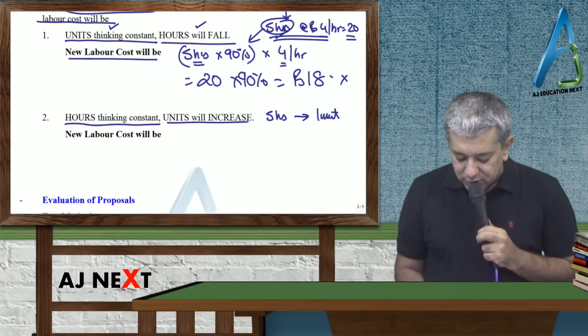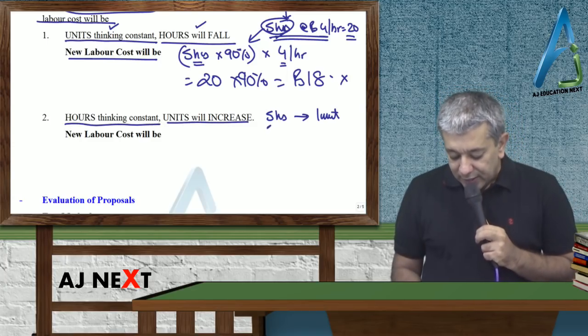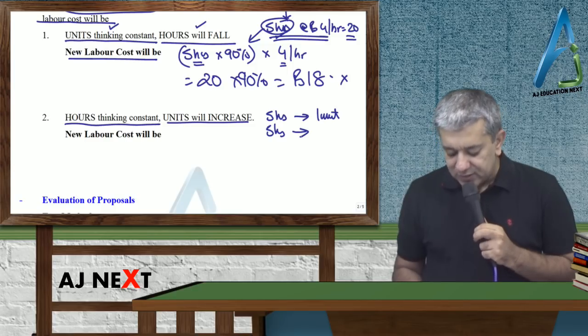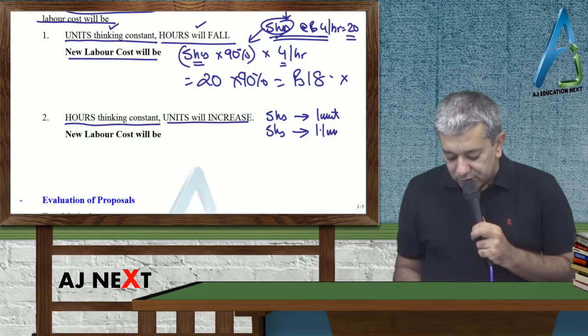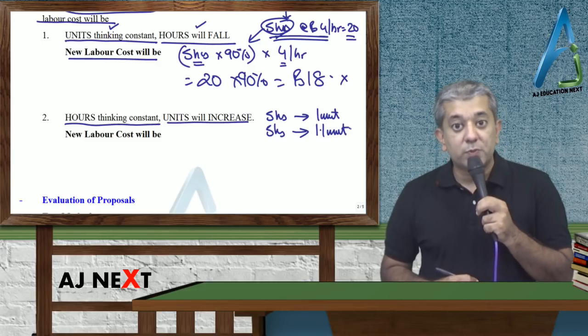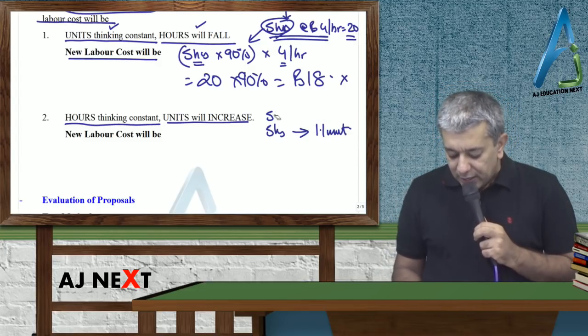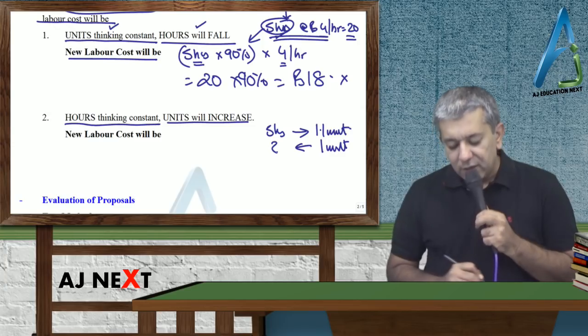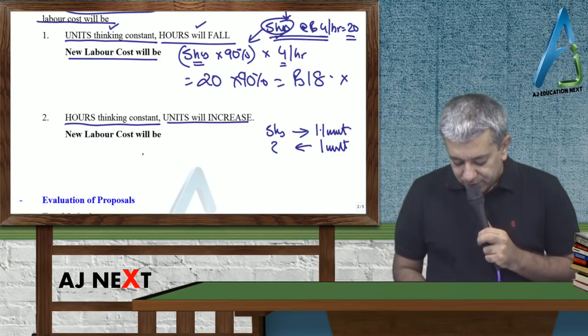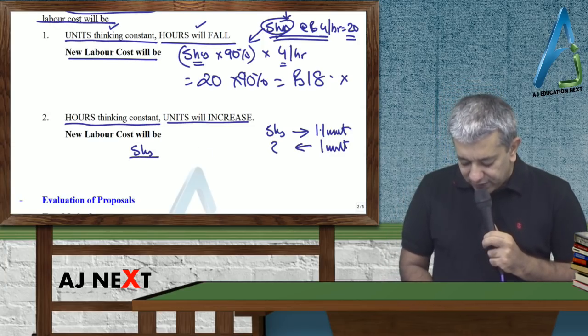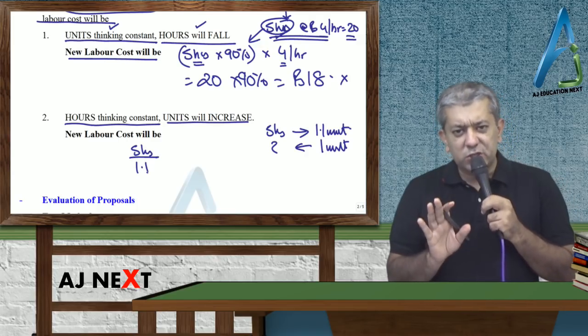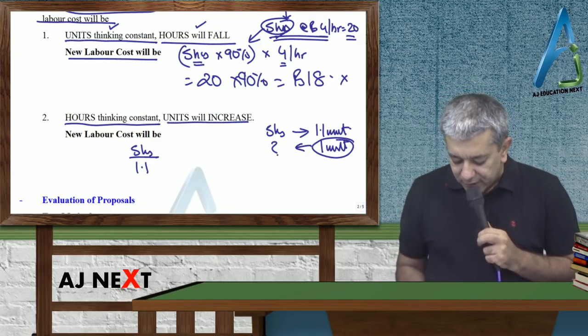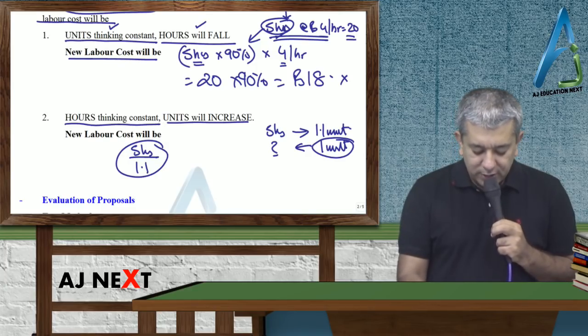Lekin ab kya ho jayega? 5 hours kaam karke, tum log 10% zyadha production karo ge. Matlab, tum log kitna units banao ge? One point one. Lekin mere ko toh, phir bhi labor cost chahiye for one unit only. Toh one unit ke liye, kitna time jayega? So therefore, five hours divided by one point one. One unit banane ke liye, aaj itna time jayega.